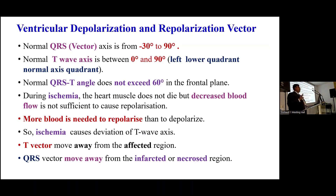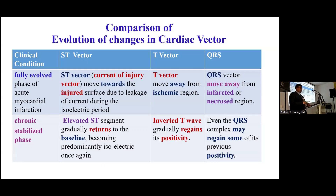The normal QRS vector axis is from minus 30 to positive 90 degrees, T wave axis is between 0 and 90 degrees in the normal left lower quadrant, and the normal QRS-T angle does not exceed 60 degrees. During ischemia, the T wave and repolarization are affected because more blood is needed. The QRS vector moves away from the infarcted or necrotic region. To compare: in the fully acute phase, the ST vector moves towards the injured surface, the T vector moves away from the ischemic region, and the Q vector moves away from the infarcted necrotic region. In the chronic or healed phase, the elevated ST returns to baseline, the inverted T wave regains positivity, and the QRS complex may regain some of its previous positivity.